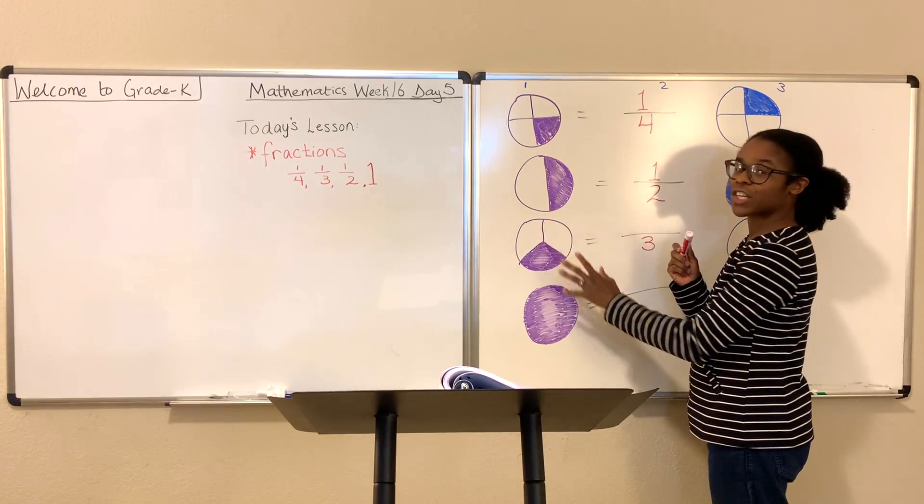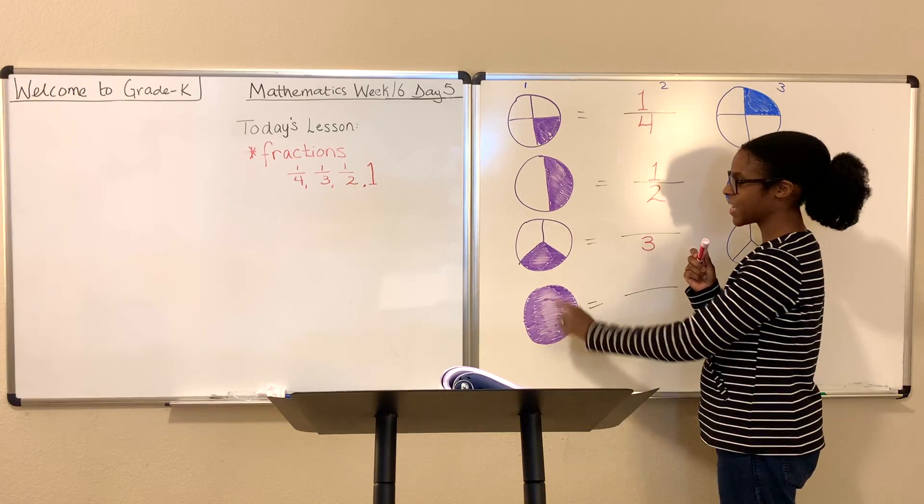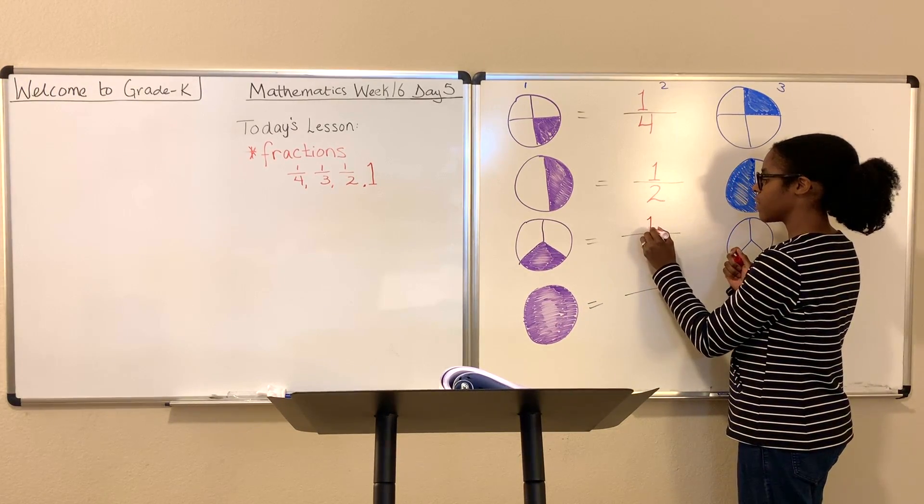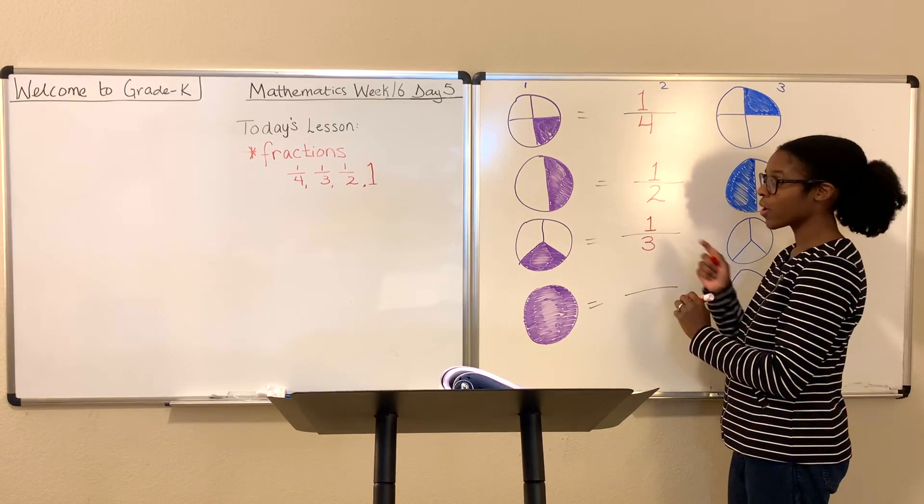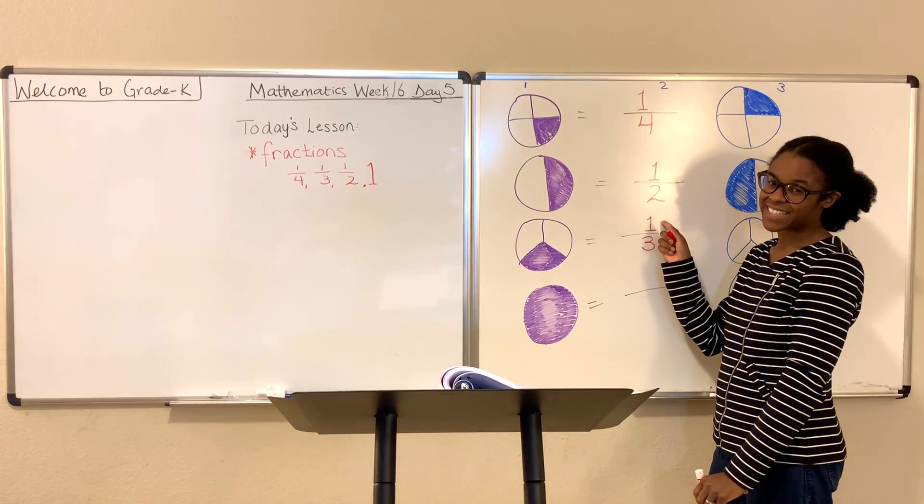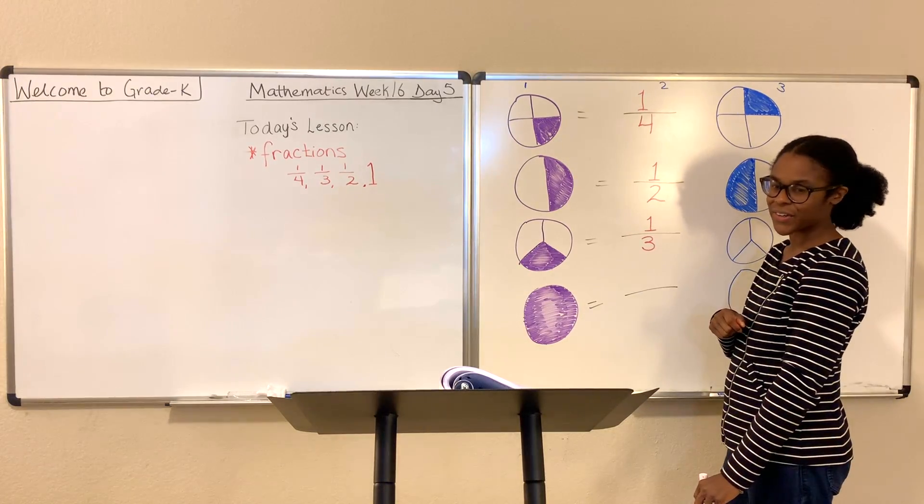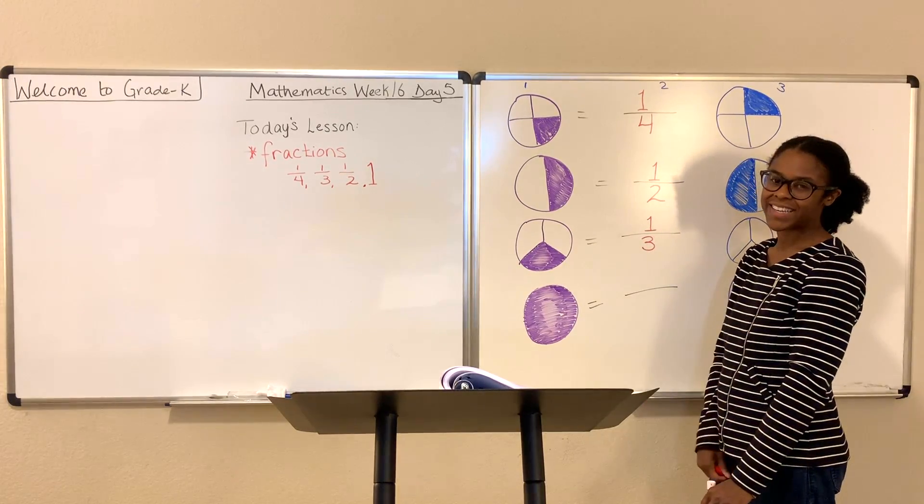1. 1 part is shaded. So we're going to write the numerator or the number of parts shaded at the top of the line. And there you have it. 1 third. 1 third of the pie is shaded. 1 third.